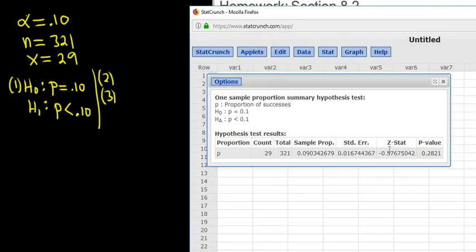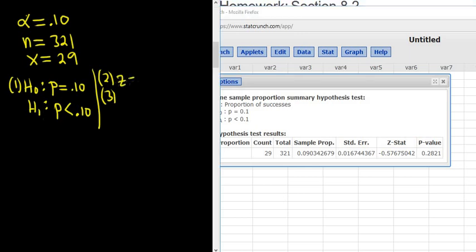So step 2 for us is the test statistic, step 3 is the p-value. So our Z is negative .57675, that should be enough decimals. The p-value, I'm going to write them all down, so p-value .2821.